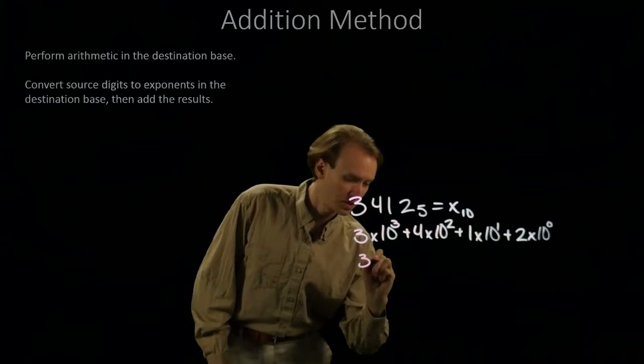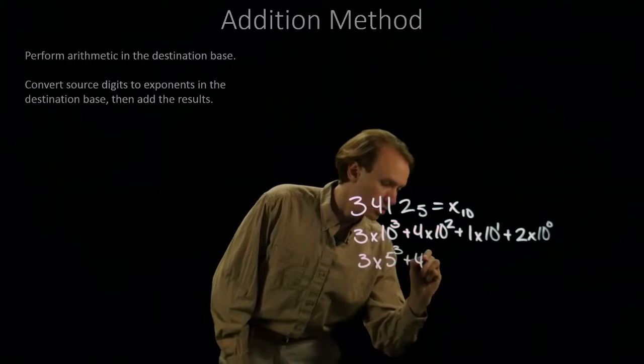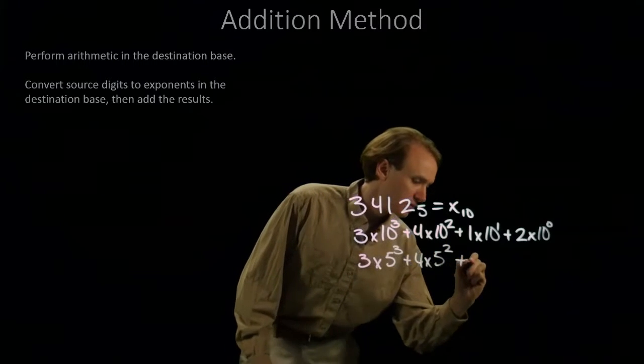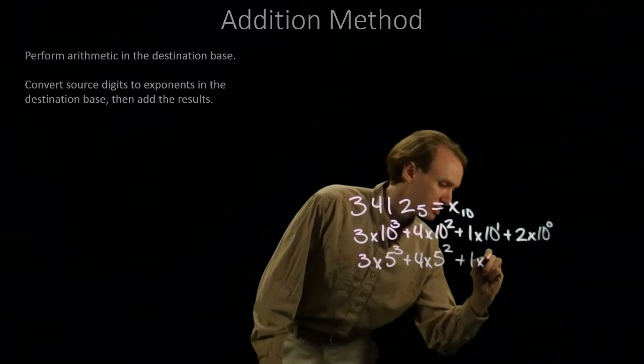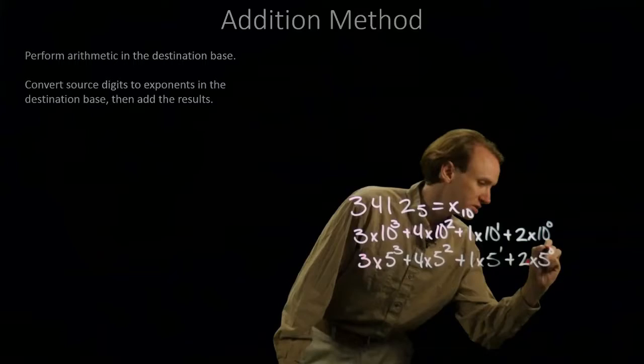So that will give me 3 times 5 to the third plus 4 times 5 squared plus 1 times 5 to the first plus 2 times 5 to the 0.